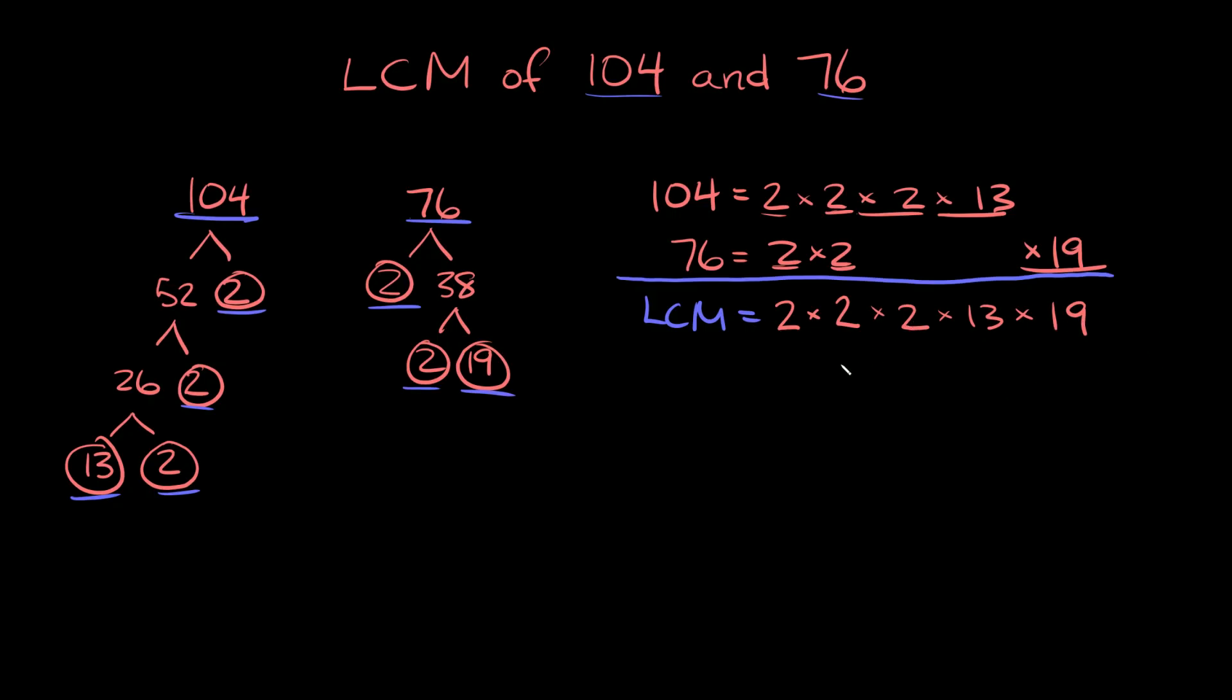So you just have to multiply all this together. I'll help you break it down a little bit. So 2 times 2 times 2, this right here is equal to 8. So 8 times 13 times 19. And then 8 times 13 right here, that's equal to 104. So we have 104 times 19, and 104 times 19 is equal to 1,976. So the least common multiple between 104 and 76 is equal to 1,976. Boom!